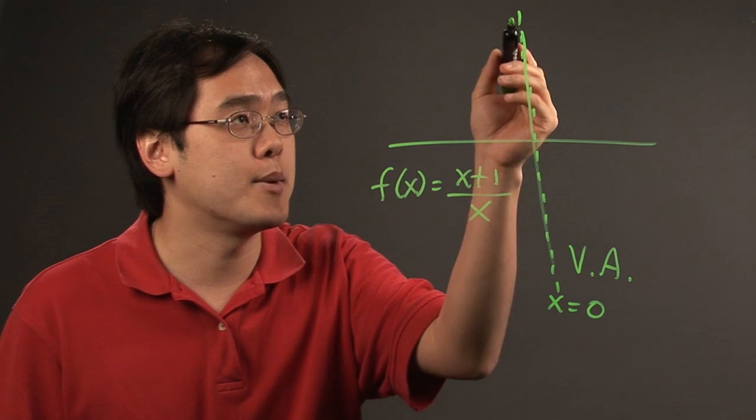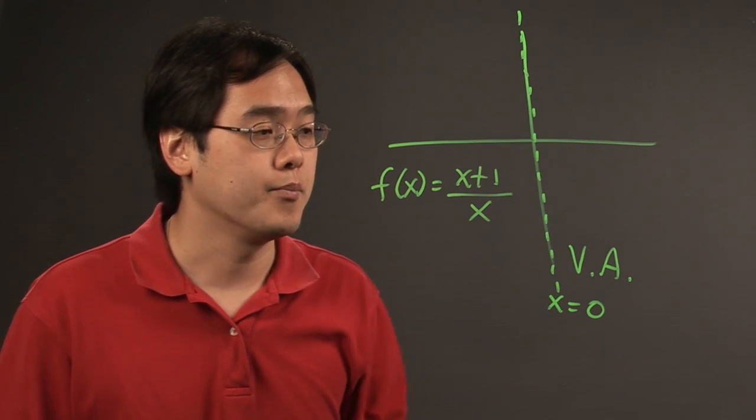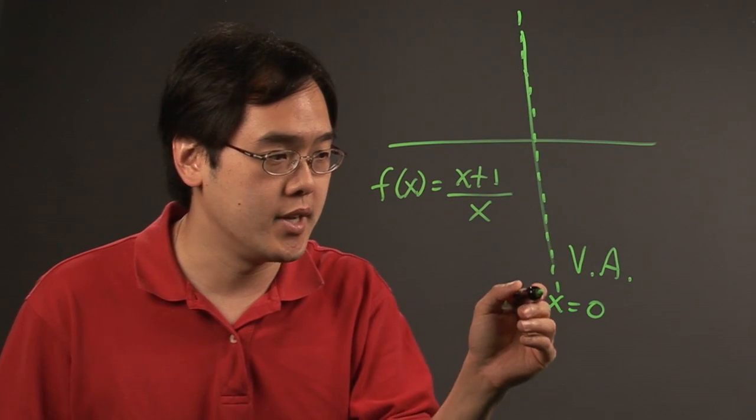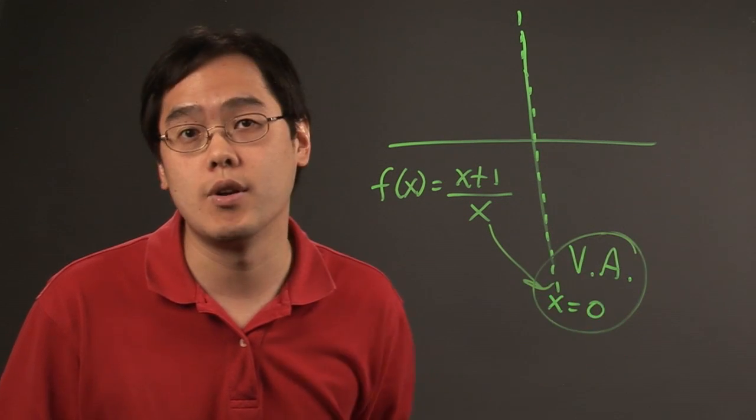Now what happens here is this function has a break along the y-axis of the graph because its vertical asymptote is x equals zero.